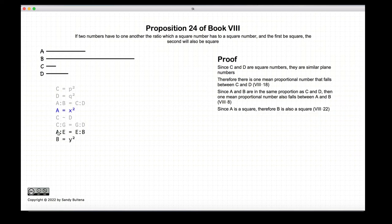And if we have three numbers, A, E, and B, that are in continuous proportion, and if A is squared, then B is also squared, according to Proposition 22 of this book.